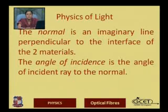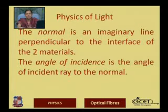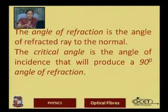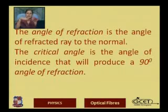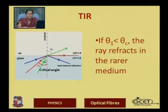Before understanding total internal reflection geometry we should know certain terms. The normal is an imaginary line perpendicular to the interface of the two materials. The angle of incidence is the angle of the incident ray to the normal. The angle of reflection is the angle of the reflected ray to the normal. The critical angle is the angle of incidence that will produce a 90-degree angle of refraction.